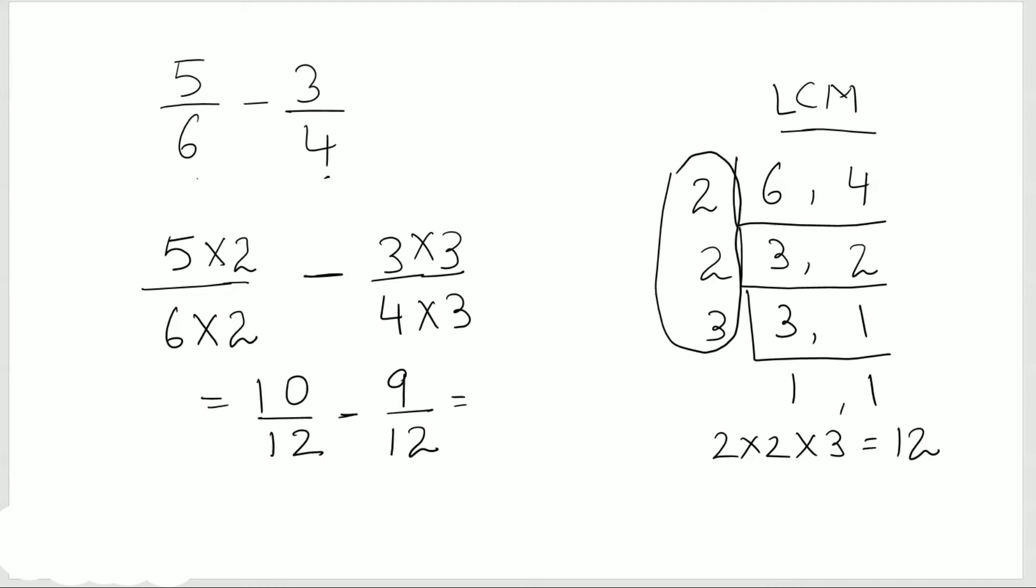Now we have the same denominator, so subtract the numerators: 10 minus 9. Keep the denominator as it is. I would get 10 minus 9 would be 1 over 12.